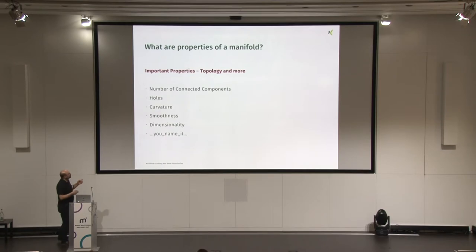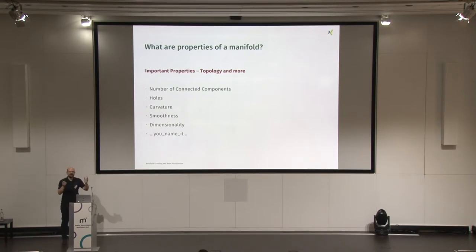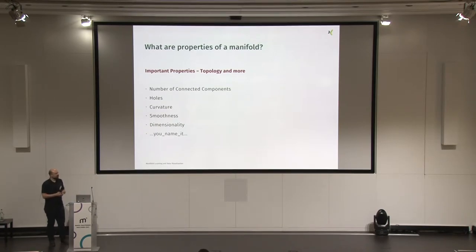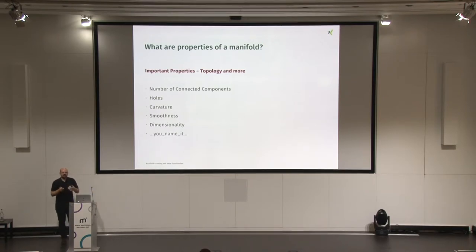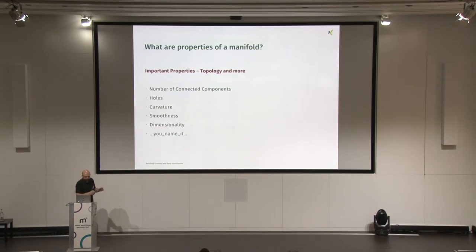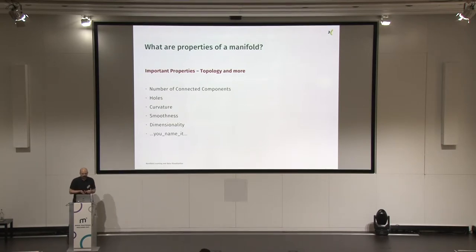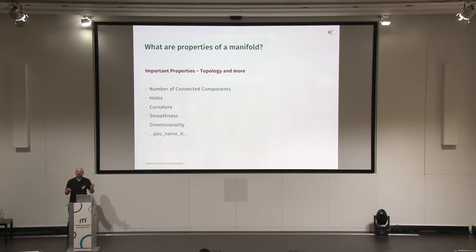We will come to the learning after discussing what these manifolds are made of — how can we describe them? You've seen this S-shaped thing and the sphere with a hole inside. The important first thing is the number of connected components — basically one piece, two pieces, whatever. These things can have holes, they're not allowed to self-intersect because that's not Euclidean space anymore locally. Holes are okay, and curvature is what you actually want, because most things in the real world have some curvature.